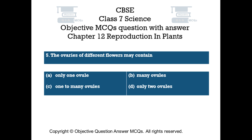Question number 5. The ovaries of different flowers may contain: Option A: Only one ovule. Option B: Many ovules. Option C: One to many ovules. Option D: Only two ovules.